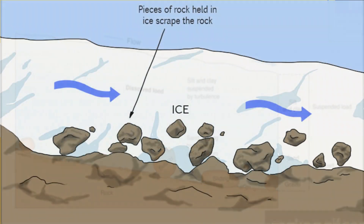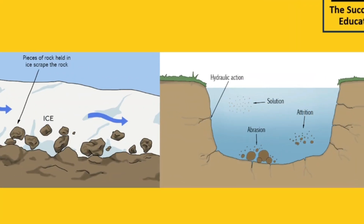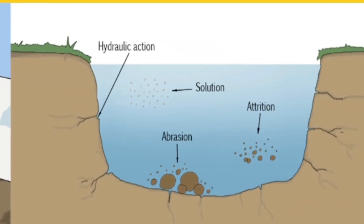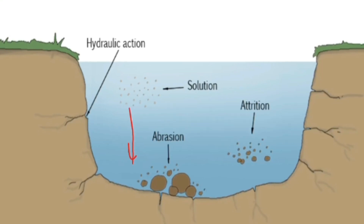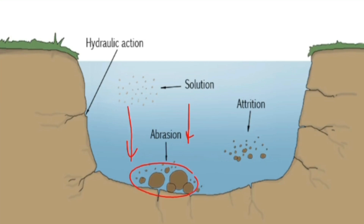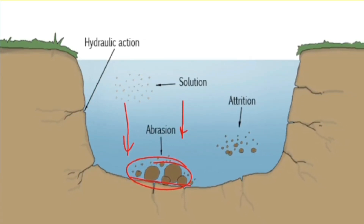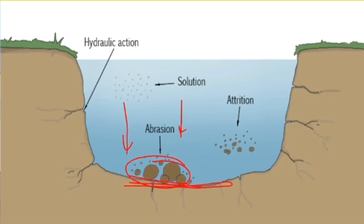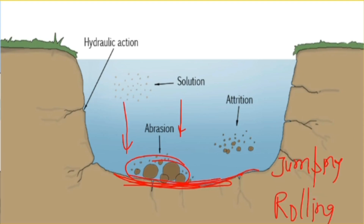Abrasion can happen in a river, by a glacier, or in the ocean. In a river, when the river is moving, it carries cobbles, pebbles, and big rock particles. These rock particles keep jumping and rolling along the river bed.